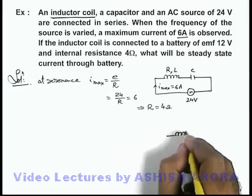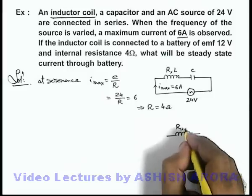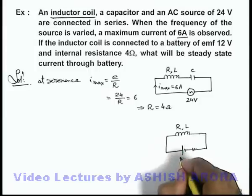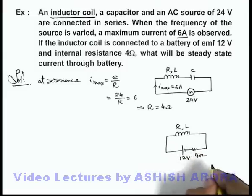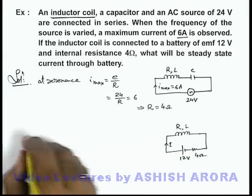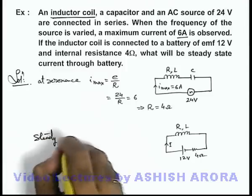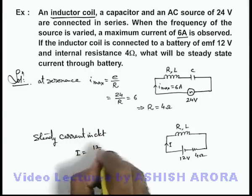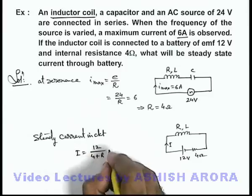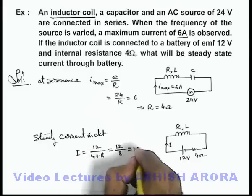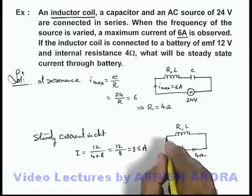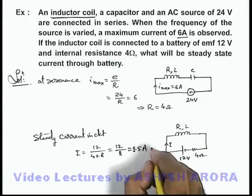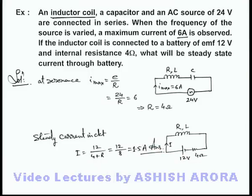Now when the same inductor coil, which has resistance 4 ohm and inductance L, is connected across a DC battery of EMF 12 volt and internal resistance 4 ohm in series, a steady current flows. The steady current in the circuit is I equals 12 divided by 4 plus 4, which is 12 by 8 — that is 1.5 ampere. This is the steady state current in the inductor, because across a DC battery in steady state there is no effect of inductance.